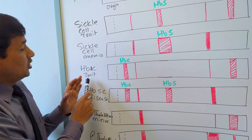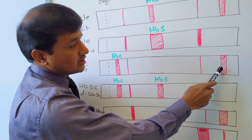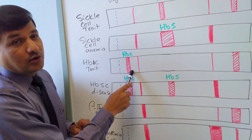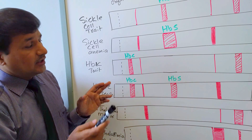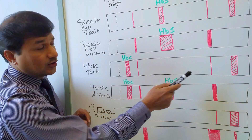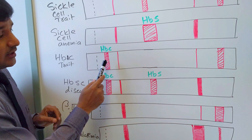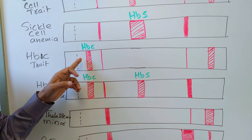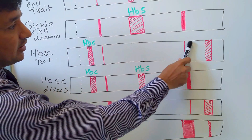In HbAC trait, one beta globin is normal and moves all the way towards the anode, whereas the other beta globin has glutamate at the sixth position replaced by lysine, which has a positive charge. Because of this, that beta globin moves but stops nearer to the cathode — that is HbC. There is no significant change in HbF and HbA2 in HbAC trait.